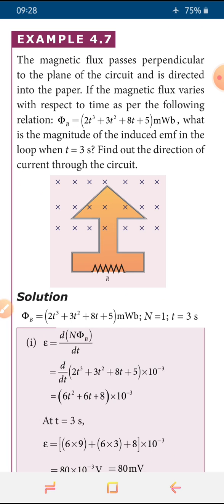The magnetic flux varies with respect to time as per the relation: φB = 2t³ + 3t² + 8t + 5 milliweber. What is the magnitude of the induced EMF in the loop when t = 3 seconds? We also need to find the direction of the current through the circuit. The magnetic flux is directed into the paper.